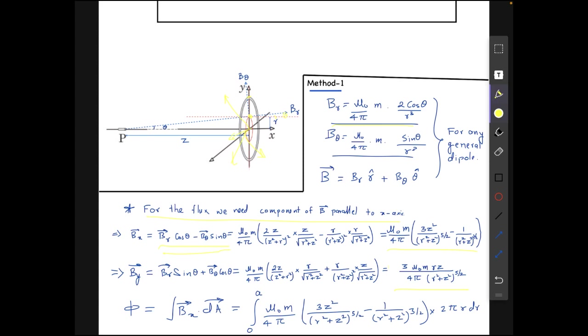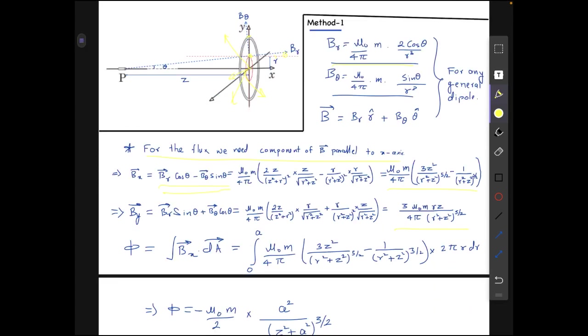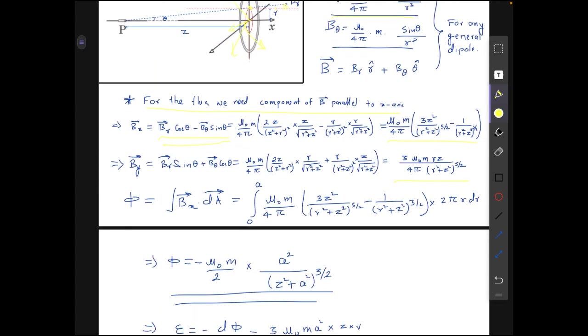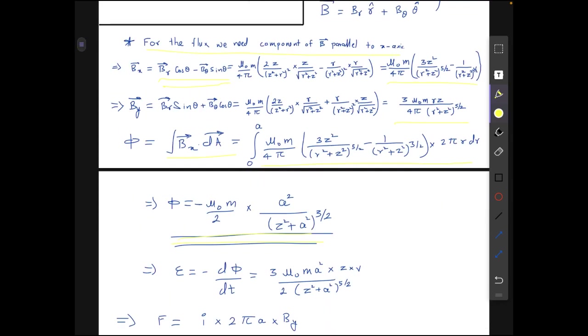Now we find the flux through the ring which is integral of Bx dot da and you can run through the integral yourself. It is just mathematics here so I am skipping this part. In the end what we get is the value of flux as mu not m by 2 times a square over z square plus a square to the power 3 by 2, where a is the radius of the ring.